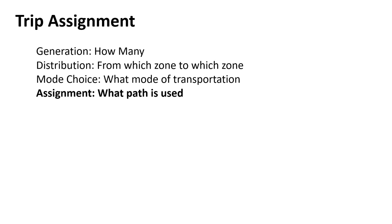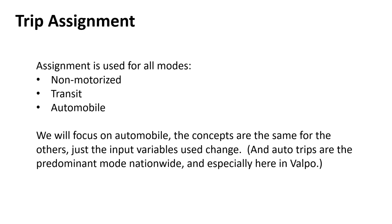Our last piece is trip assignment. Now we know how many people are making trips, where they want to go, and what method they'll use to get there. Now what path are they going to take? For a car it's which road to use; for transit it's which bus line. In Chicago you might choose between the CTA train or bus. Trip assignment comes down to exactly what route you're taking.